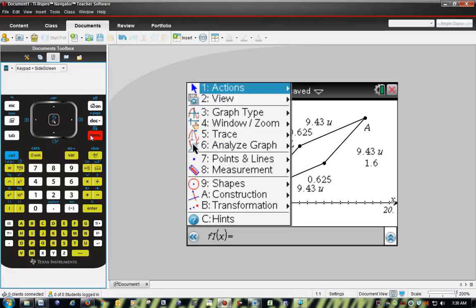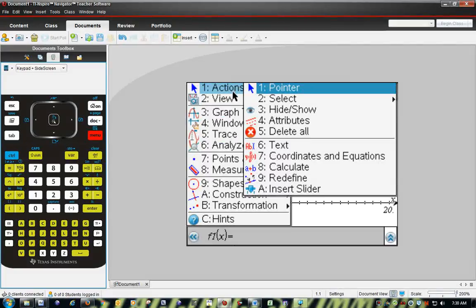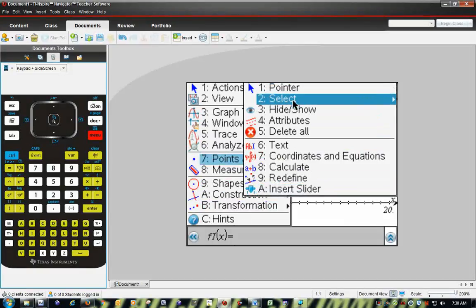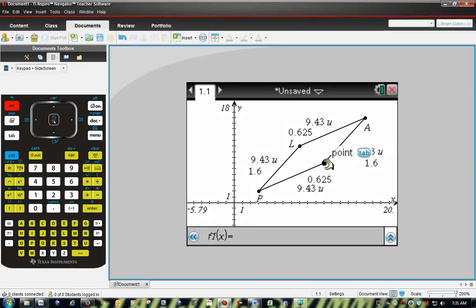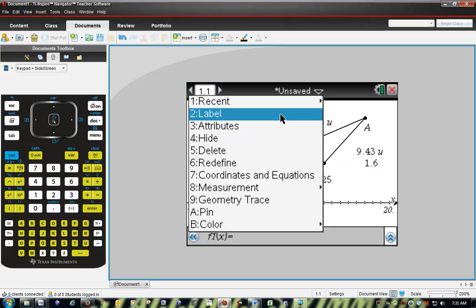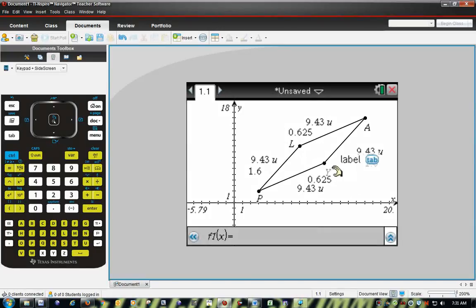Hit menu, actions. All right, I'm not exactly sure where to put it. All right, so now we have all of the slopes. So for PL, LA, AY, and PY.